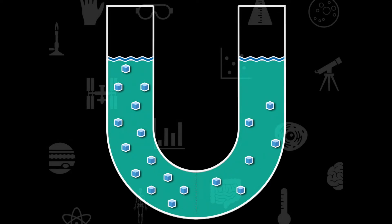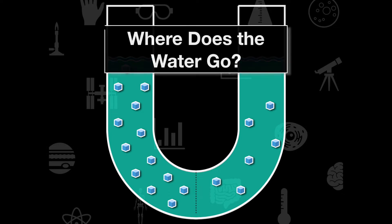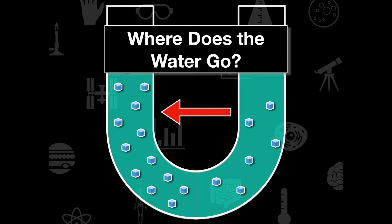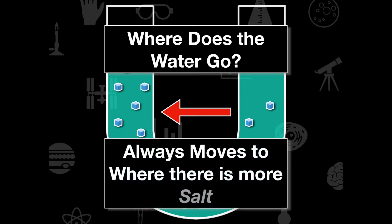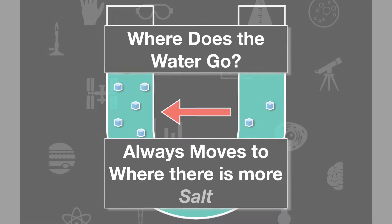Let's go through some practice problems. The question is: where does the water go? You'll see problems asking where the net movement of water is. Remember, this is a ratio of salt to water — we want it to be at equilibrium. The number one rule is: water always moves to where there is more salt. Wherever you see a higher solute, higher salt, higher sugar, or higher glucose concentration, that is where the water moves.